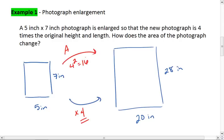You could have also just actually found out the areas. The area of the original figure is 5 times 7, which is 35 inches squared. The area of the other one is 20 times 28, which is 560 inches squared.